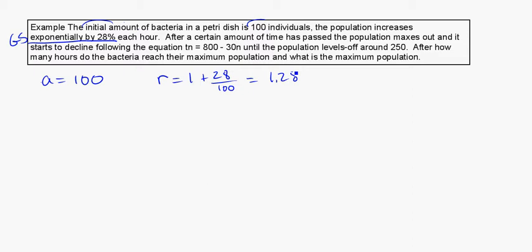Now after a certain amount of time has passed, the population maxes out and starts to decline following the equation Tn is equal to 800 minus 30n until the population levels off around 250. So how many hours do the bacteria reach their maximum population, and what is that maximum population?